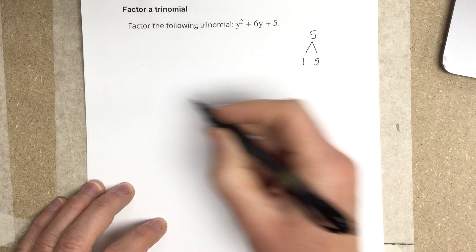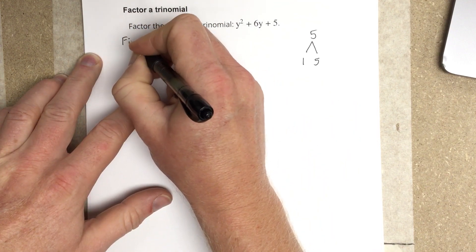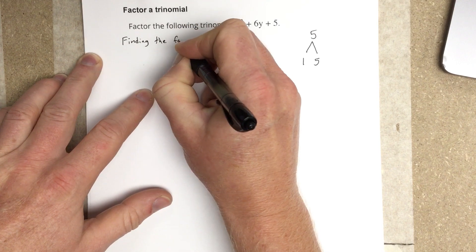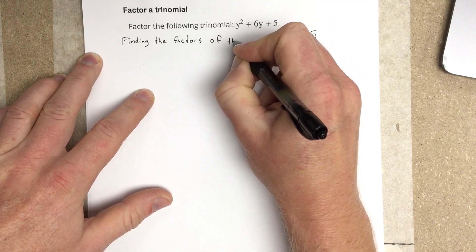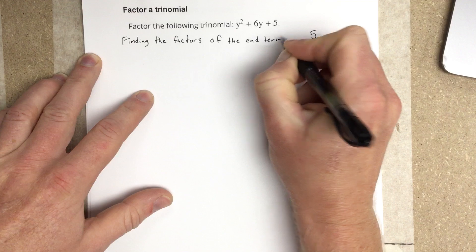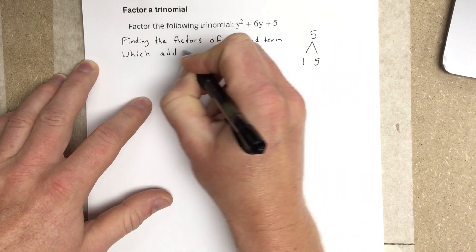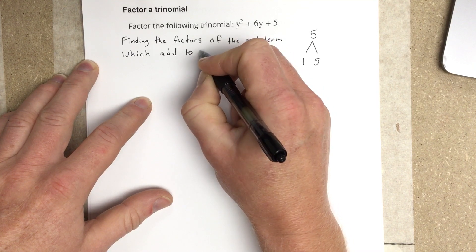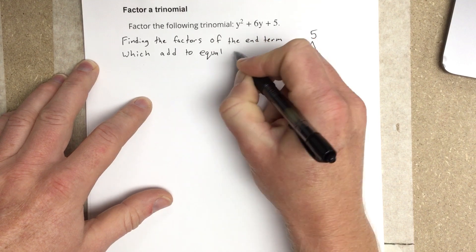And we're trying to, I'll write this out. We're finding the factors of the end term which add to equal the middle term.